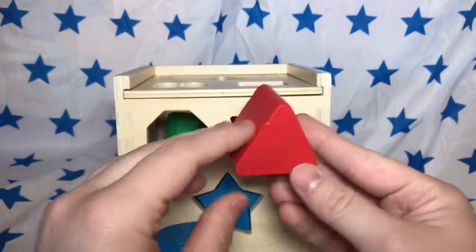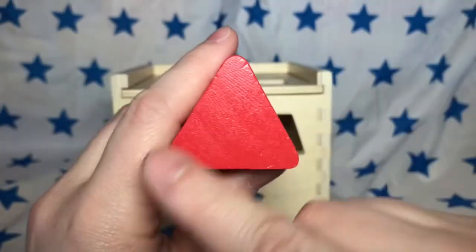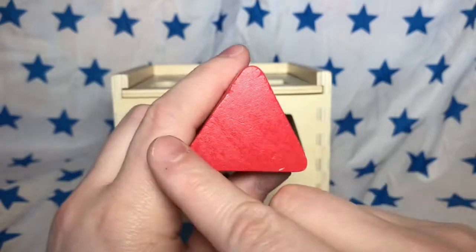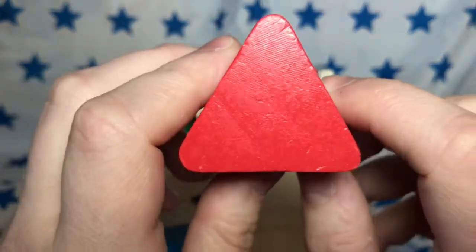We only have two shapes left. This is a red triangle. It has three sides. One, two, three. Three sides. It's a red triangle.